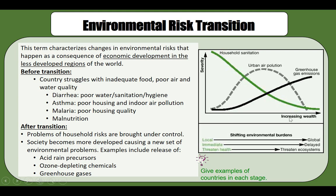Household hazards dominate in the poorest parts of the world, as those countries struggle with inadequate food, poor air and water quality, leading to widespread diarrhea, asthma, malaria, and malnutrition. During the transition, as countries reach middle-income status through industrialization, environmental risks shift towards industrial and vehicular pollution.